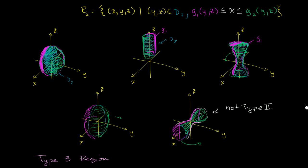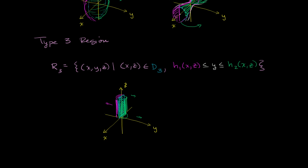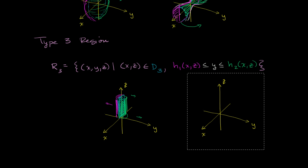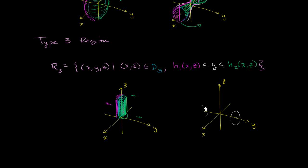But what would not be a type 3 region? If we just rotate the hourglass so it's oriented along the y-axis, now y can't be expressed as simply being between two surfaces that are functions of x and z. You would have to break this up in order to do that. You could break this region into two type 3 regions, but the whole thing itself is not a type 3 region.